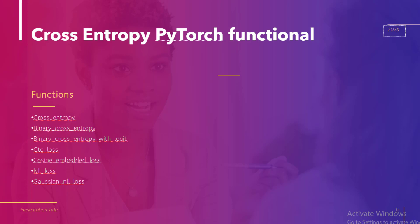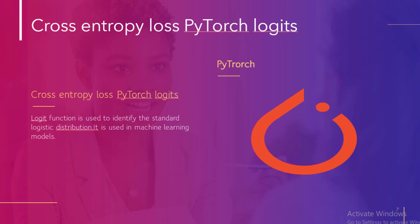Let us move to the next topic: Cross Entropy Loss PyTorch logits. Here we will learn about logits. The logit function is used to identify the standard logistic distribution. It is used in machine learning models, and PyTorch logits are used to take a score which is called the logit function. We can learn this with the help of an example — let us move into Google Colab to see the implementation.